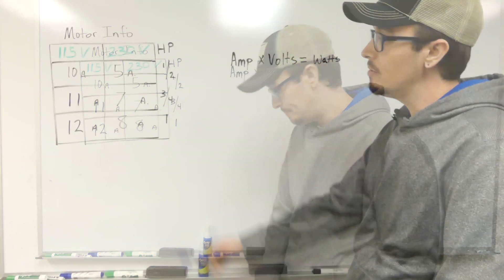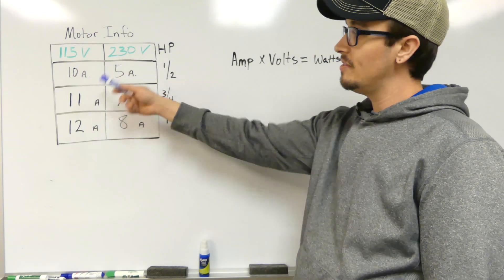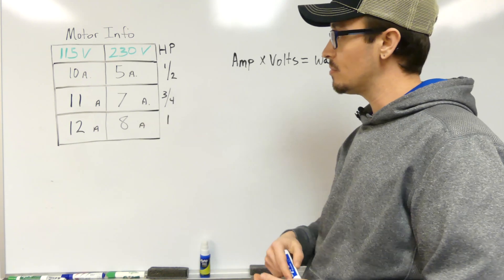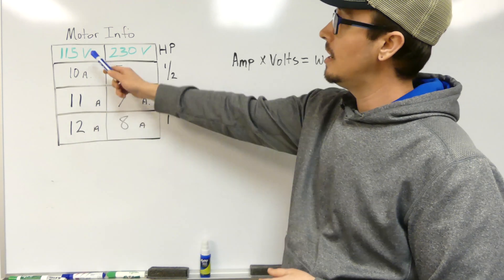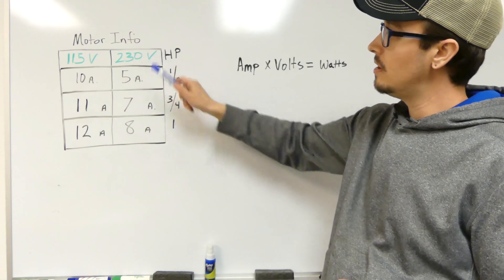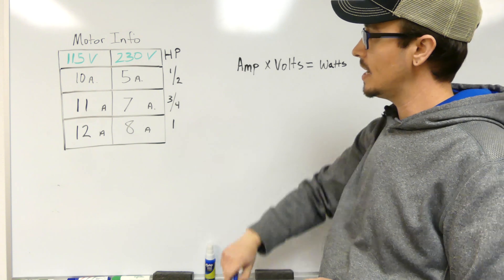Okay, so I've got an informational chart over here. These are rough numbers - make sure you check with your particular motor to get the accurate numbers. We've got 115 volt column and a 230 volt column, and horsepowers here on the right: half, three-quarter, and one horsepower.